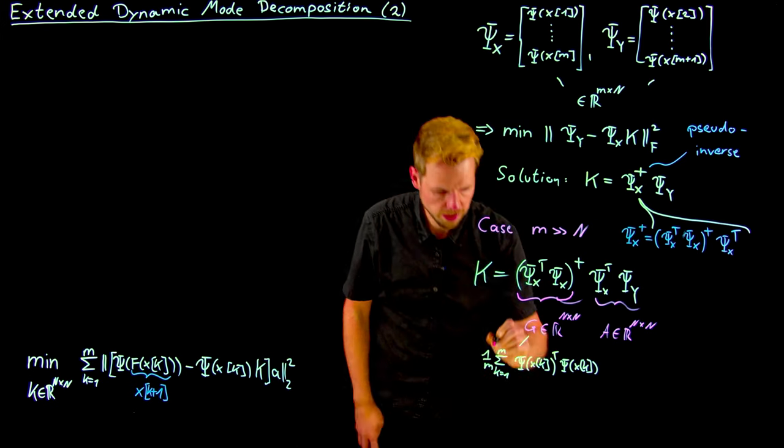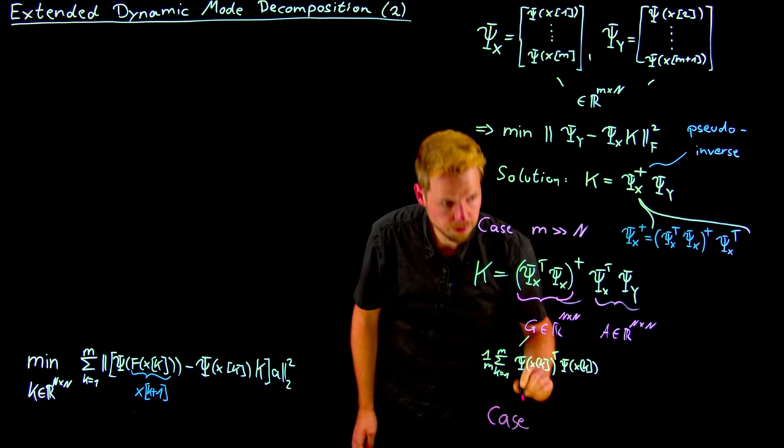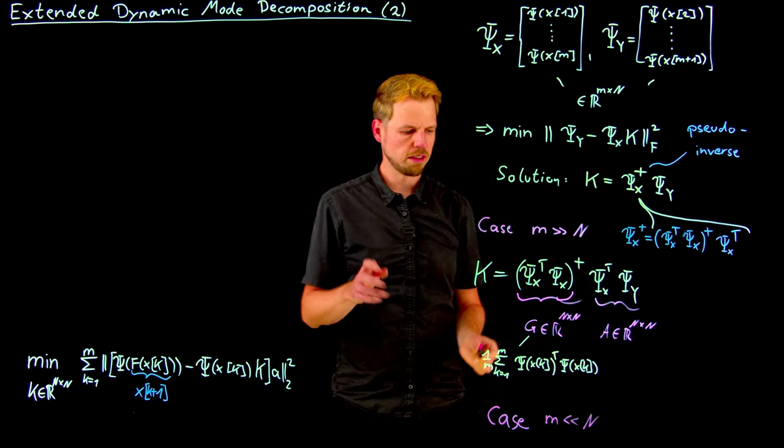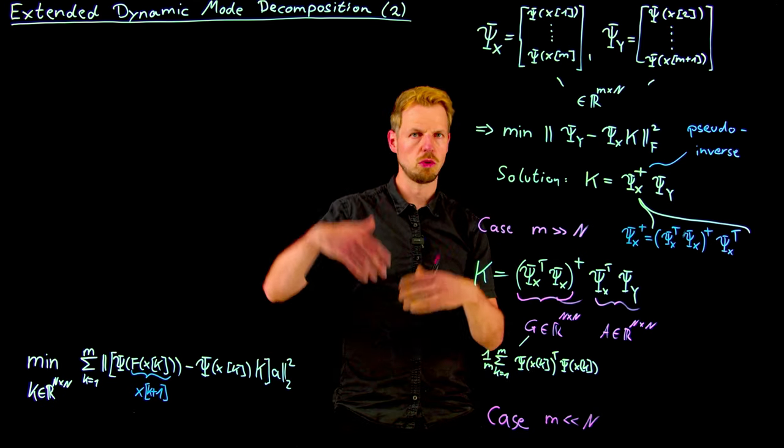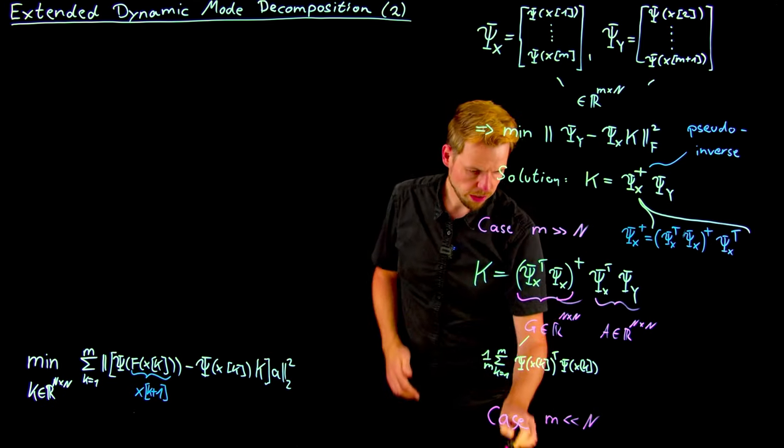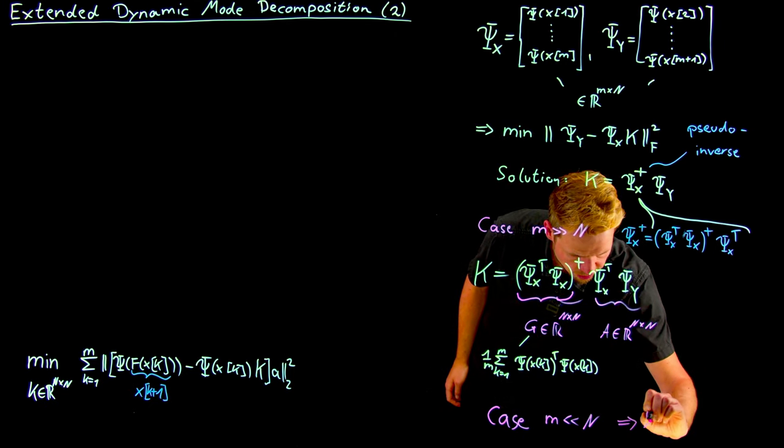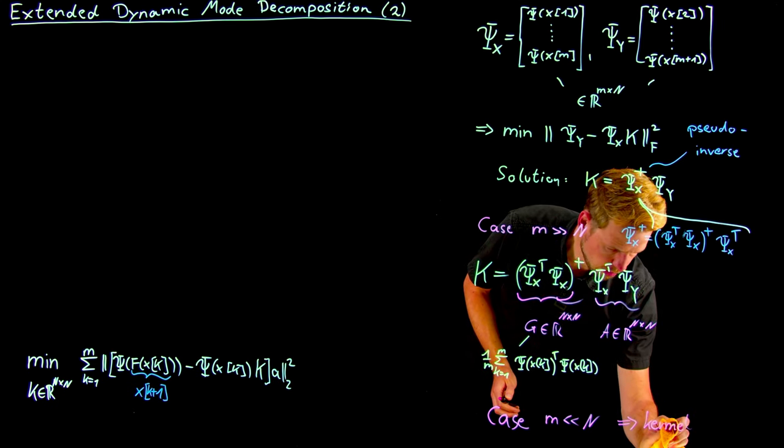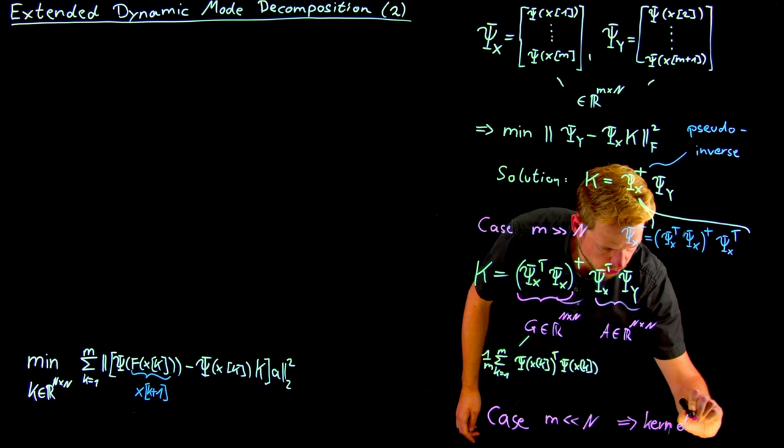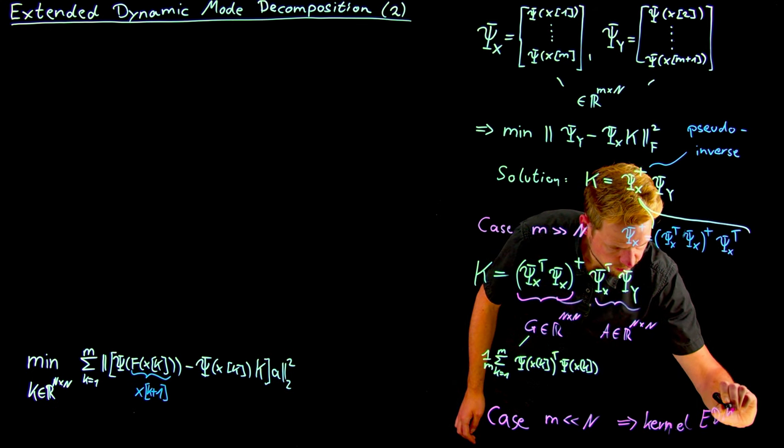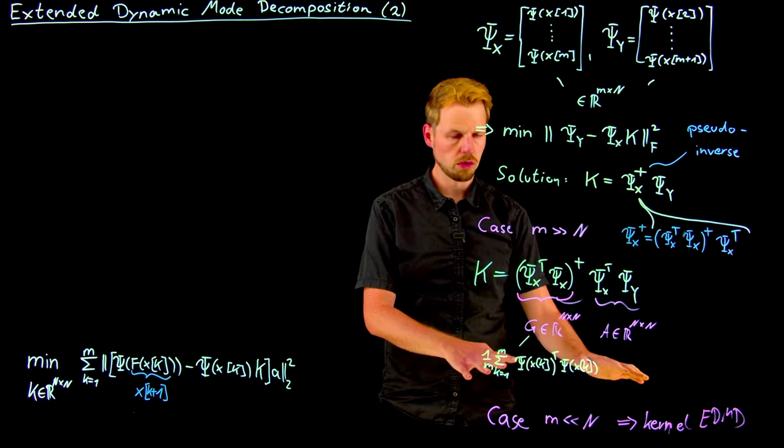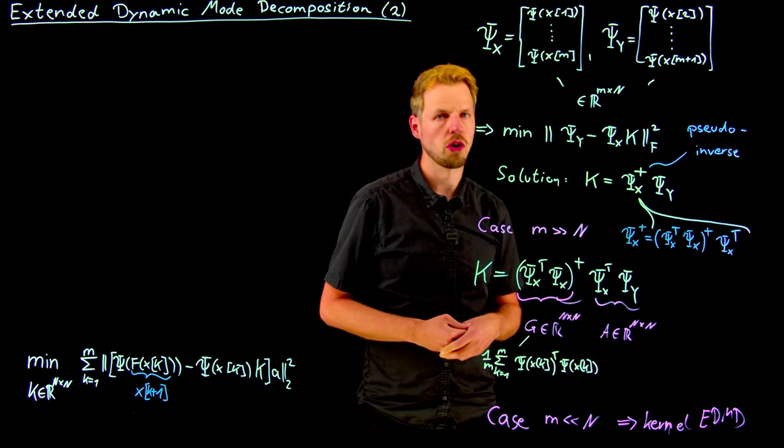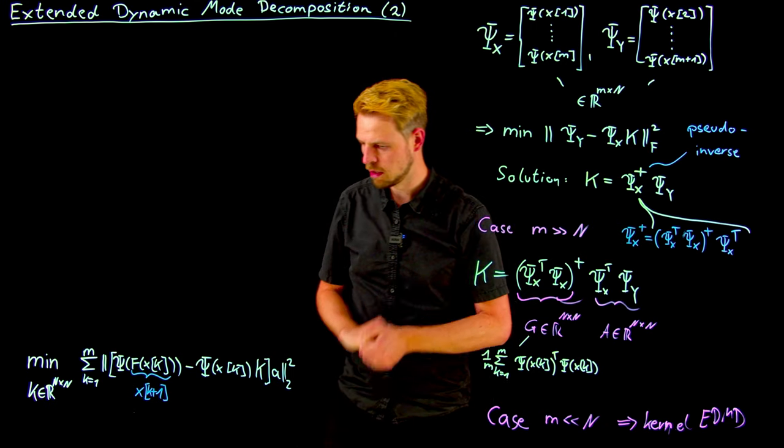Before we conclude with a short example, the second case where this is the opposite, if we think about fluid dynamics and we have a few snapshots and we have a large state space that we want to lift, then we need to go another direction that we are going to discuss later, which is a kernel method. So there's a kernel version of EDMD that allows us to take into account inner products with a kernel, by defining a kernel and then not explicitly lifting to this large state space.